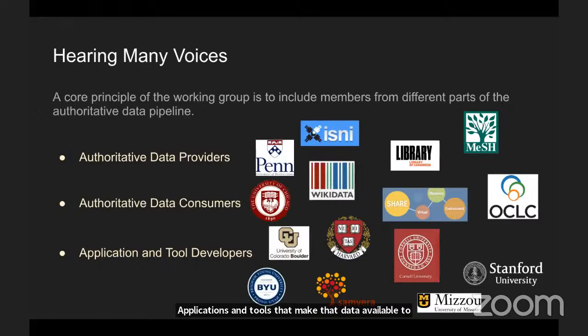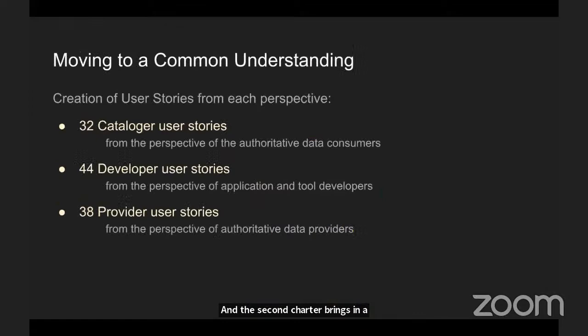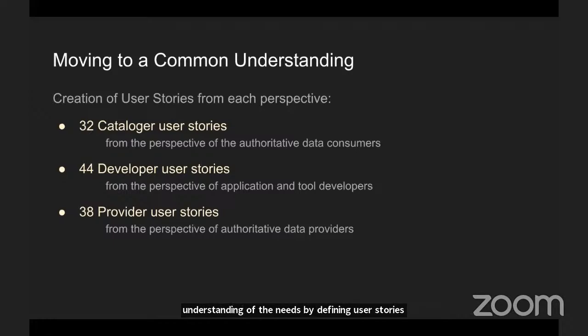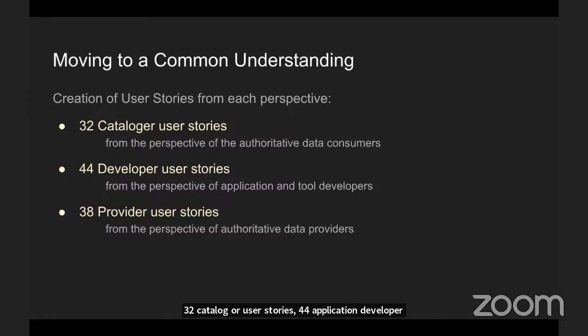We also include developers who create the software that accesses authoritative data APIs and creates applications and tools that make that data available to consumers as part of their workflow. The second charter brings in a few new voices. The first charter focused on creating a common understanding of the needs by defining user stories from the perspective of each of these roles. We have 32 cataloger user stories, 44 application developer user stories, both from the UI and backend perspectives, and 38 provider user stories.